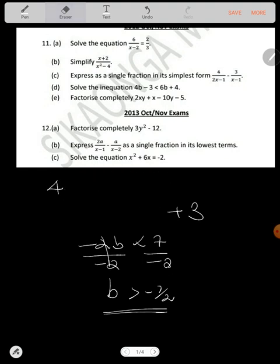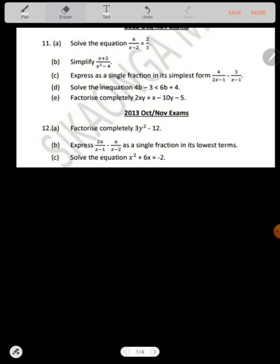And the other one we are factorizing: 2xy plus x minus 10y minus 5. First, what is common here? I can group them if I want.